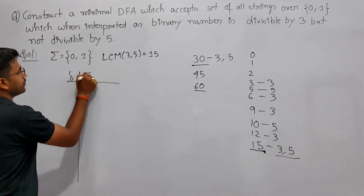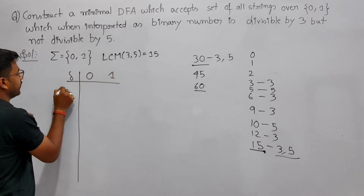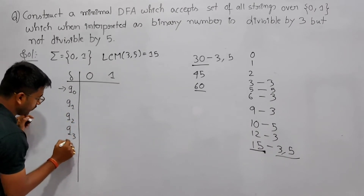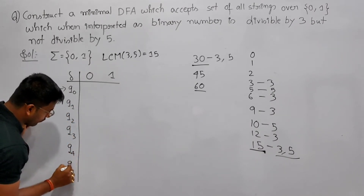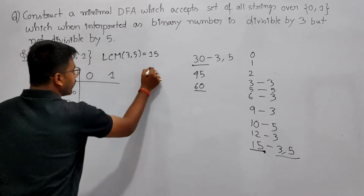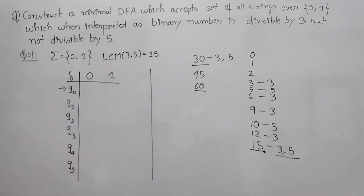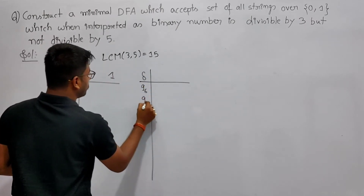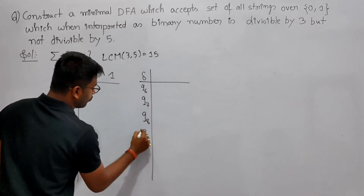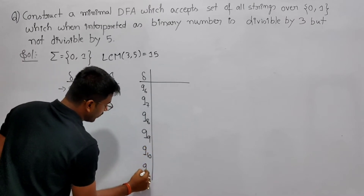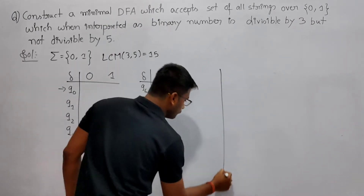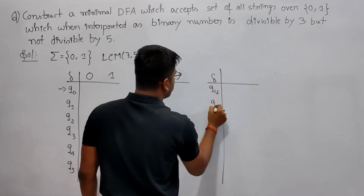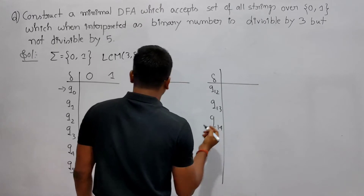So delta will be here, then 0 and 1 as inputs. The states are: initial state Q0, then Q1, Q2, Q3, Q4, Q5, Q6, Q7, Q8, Q9, Q10, Q11, Q12, Q13, Q14. So we have 15 states total for the DFA based on remainders mod 15.